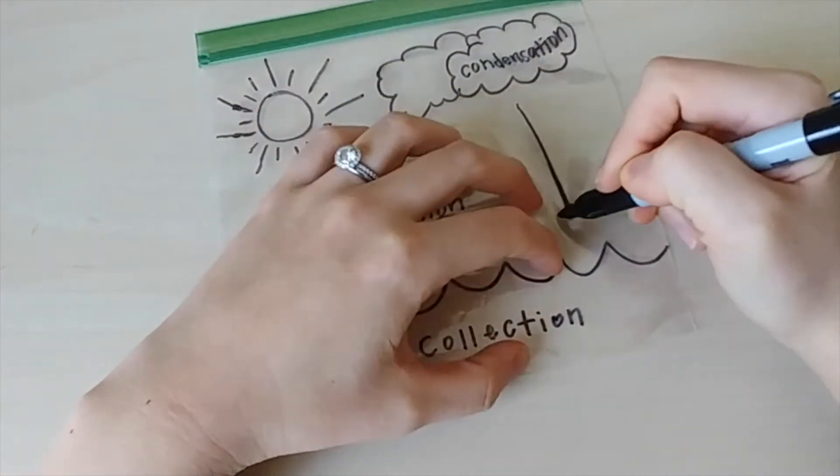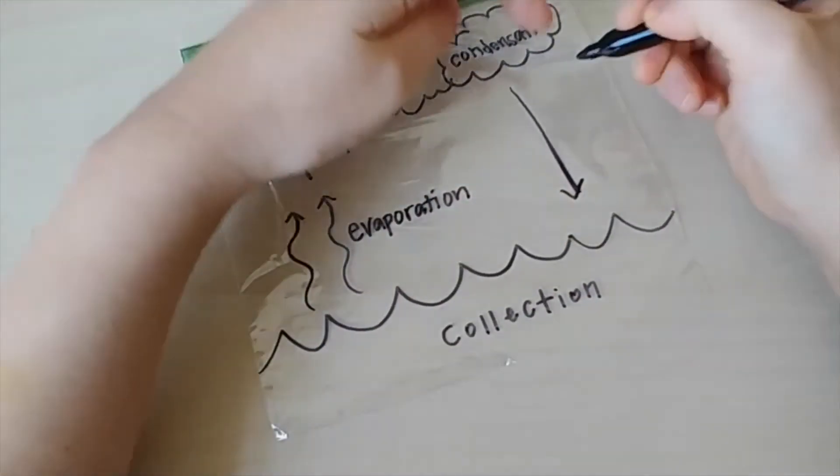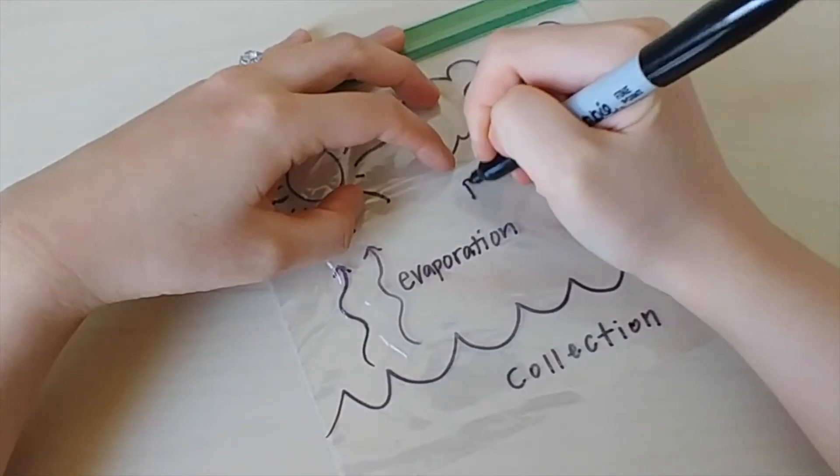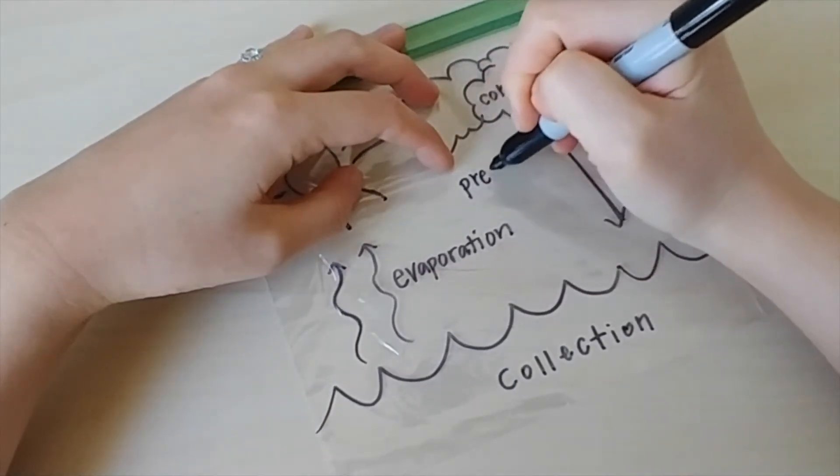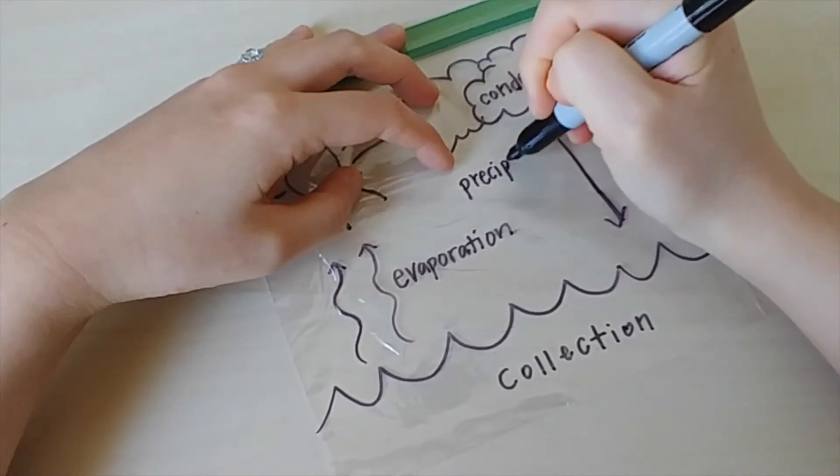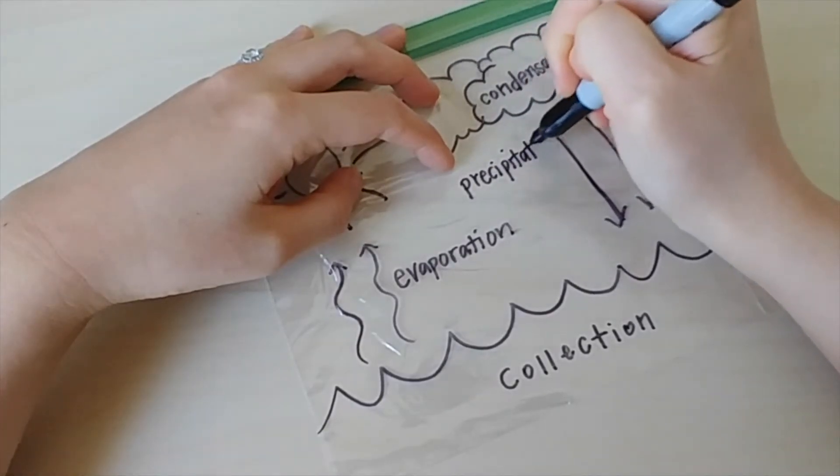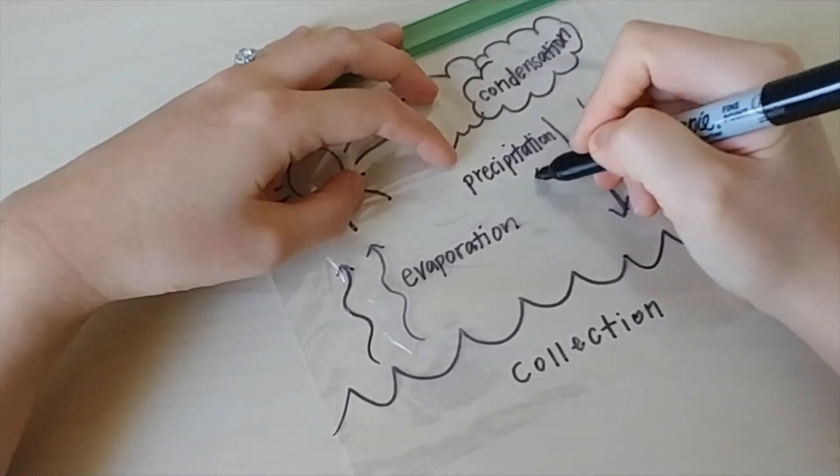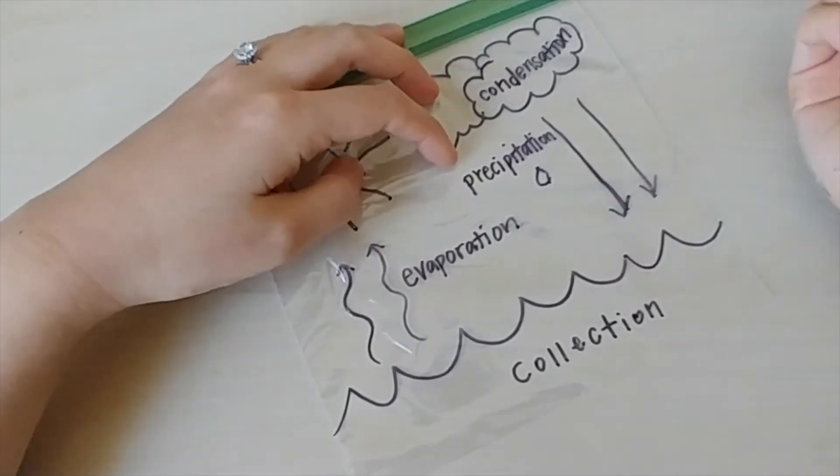Next, draw some arrows pointing downwards from the clouds to the ocean because we are showing the final process of precipitation. When the water droplets get too heavy, they precipitate downwards in the form of snow, sleet, hail, and rain.